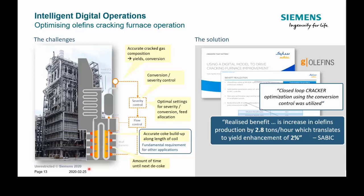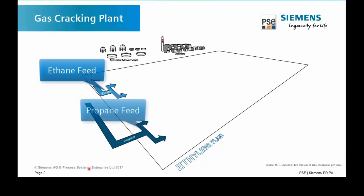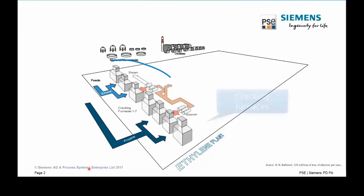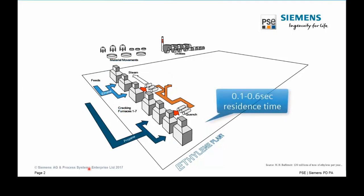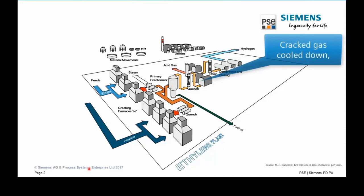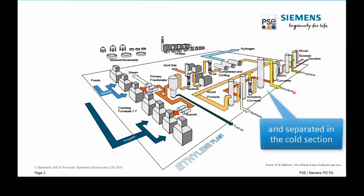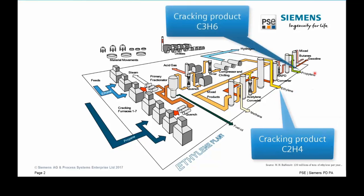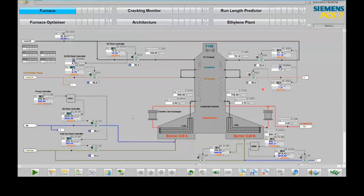Let's look at how this technology can be applied online. On screen is a gas cracking — ethylene — plant. Typically you have two feeds, ethane and propane, and then there are crackers — in this case seven crackers operating at 850 degrees Celsius — followed by cold section compression units and the separation part where the desired products, ethylene and propylene, are obtained and later used for polymerization plants.